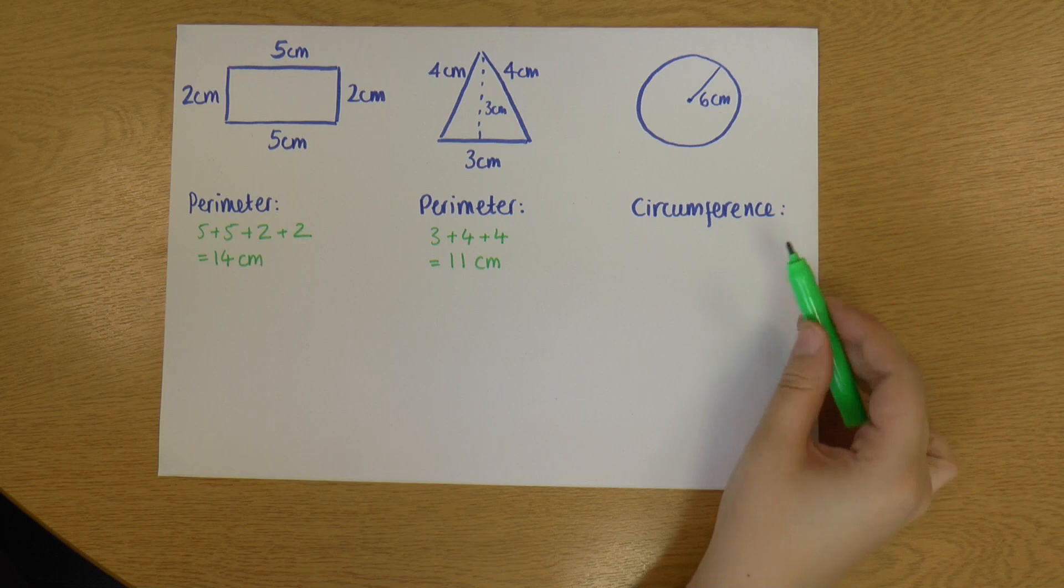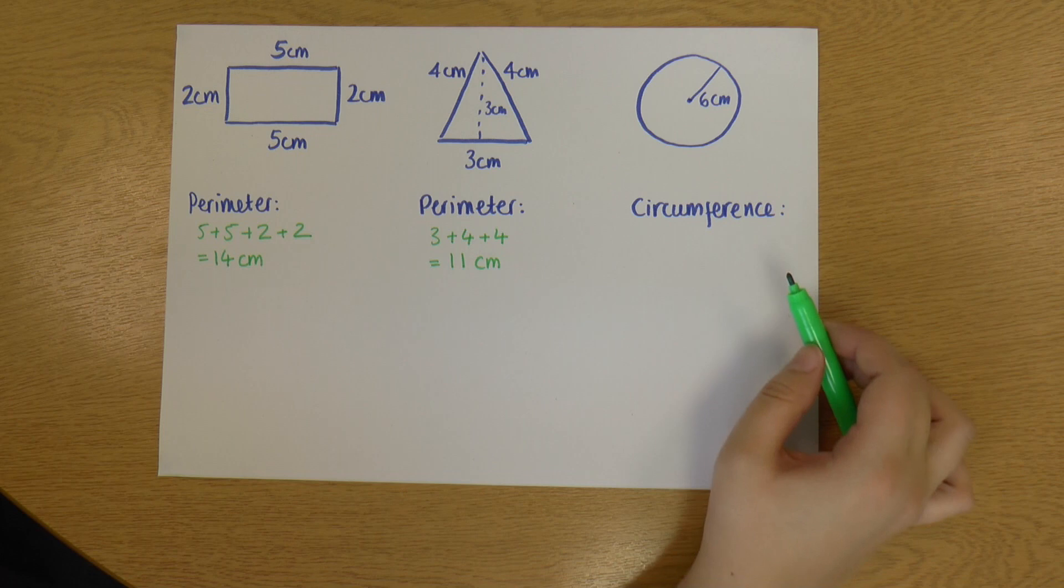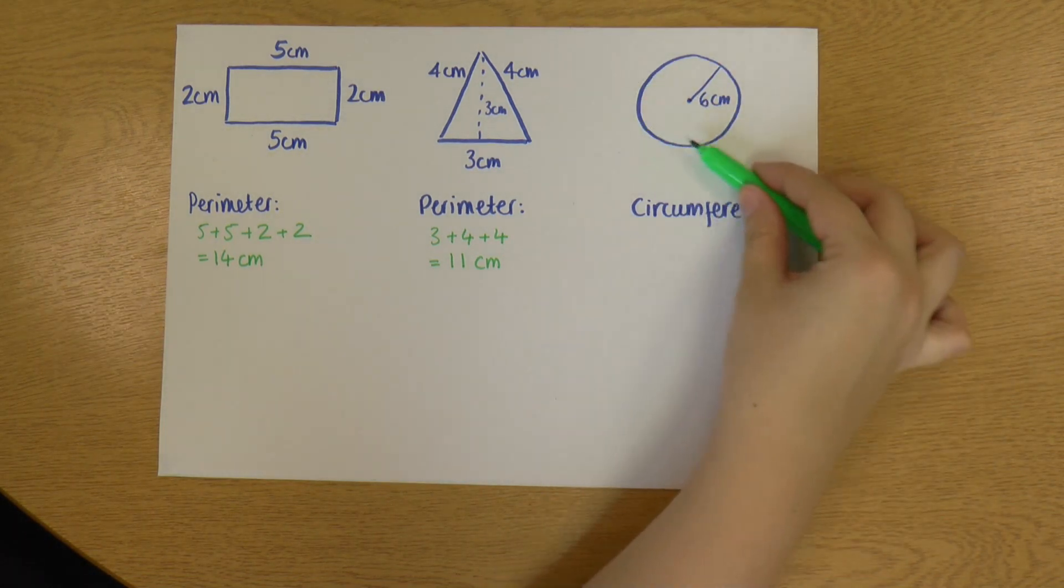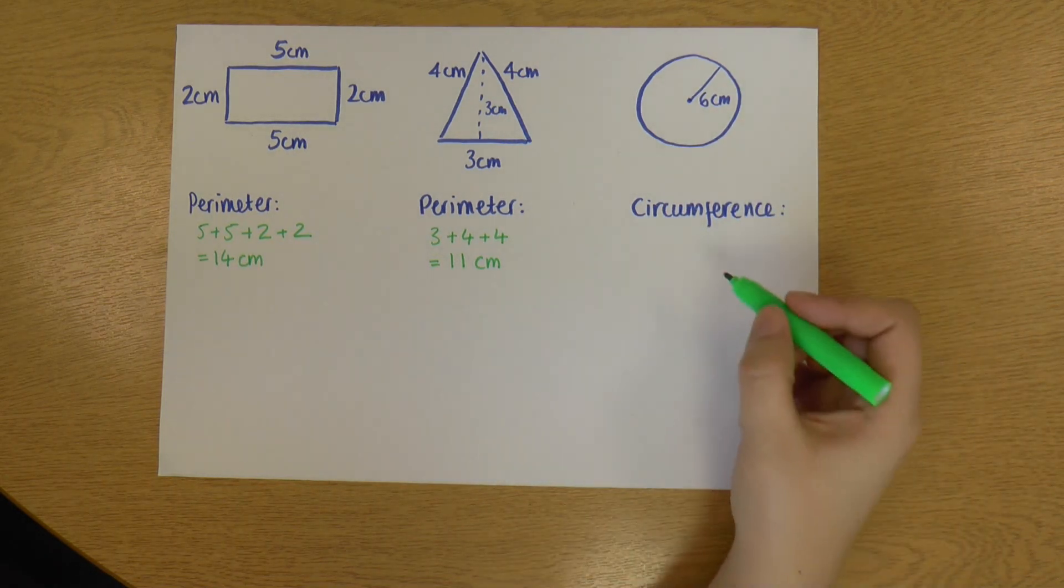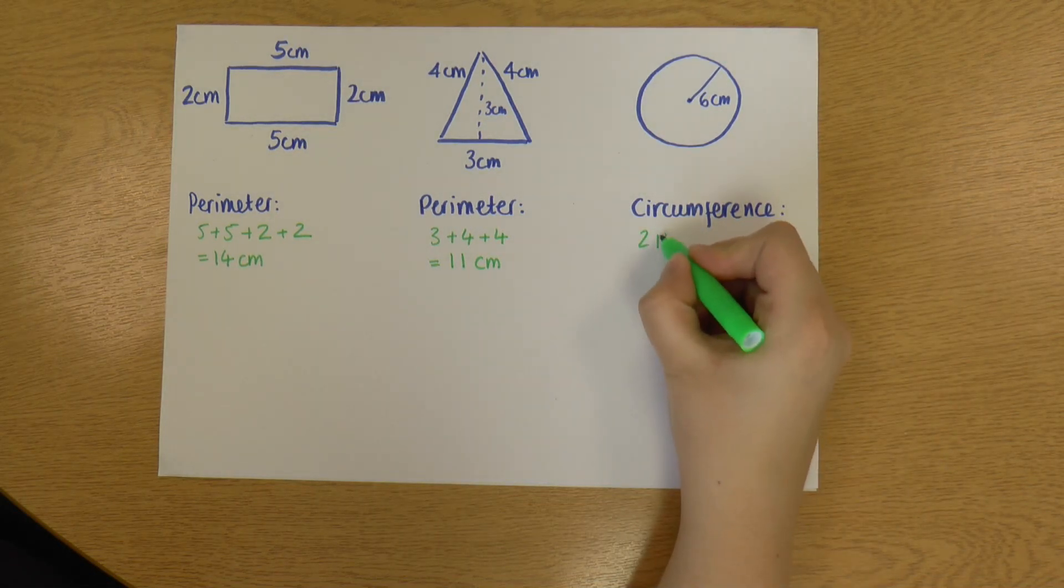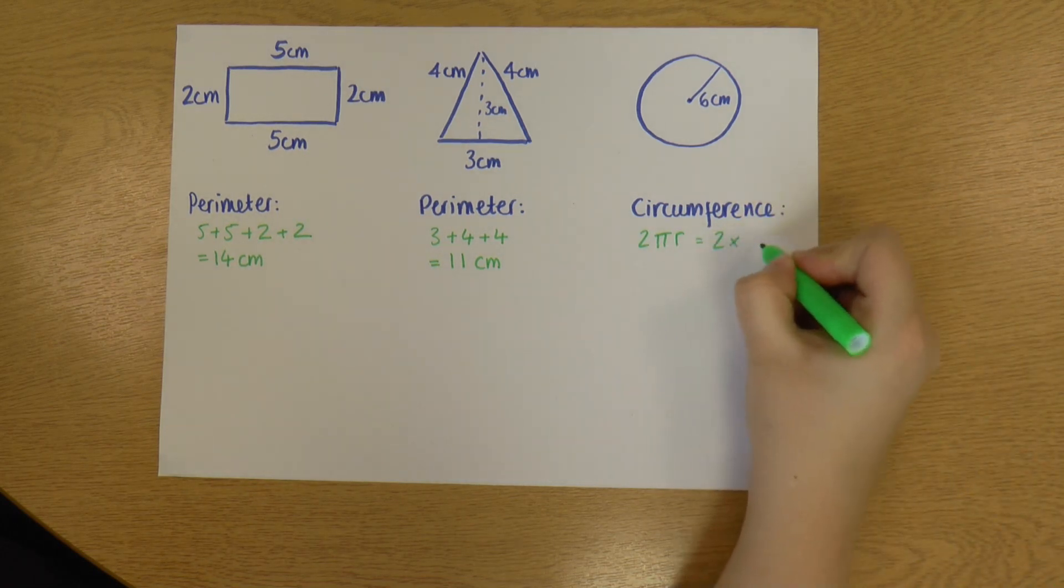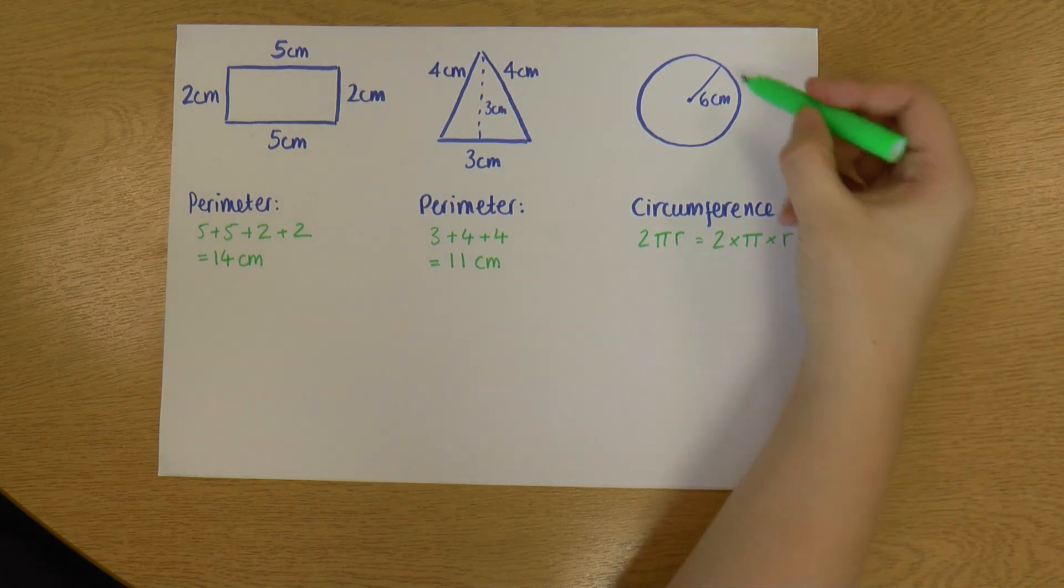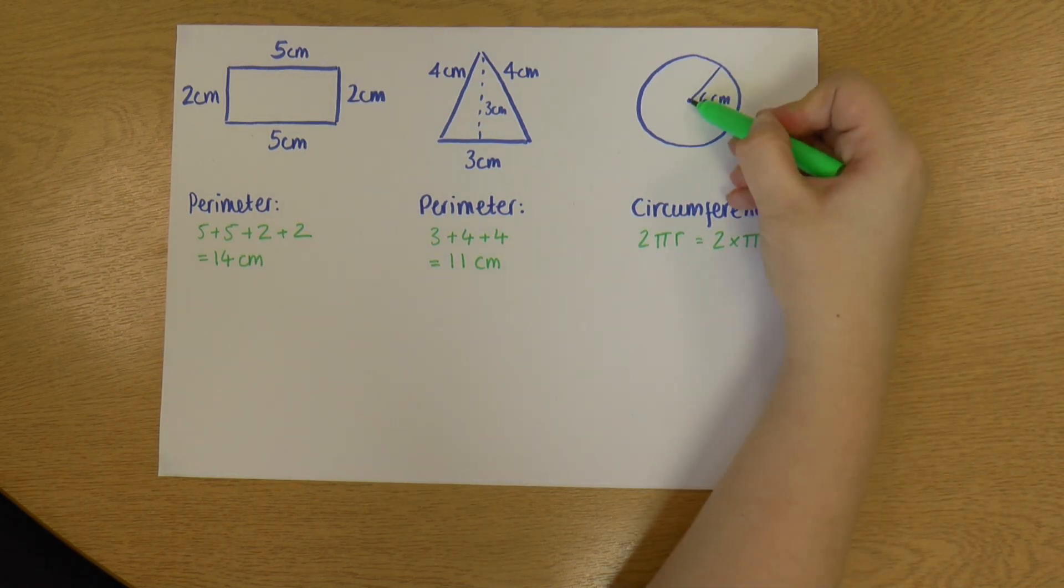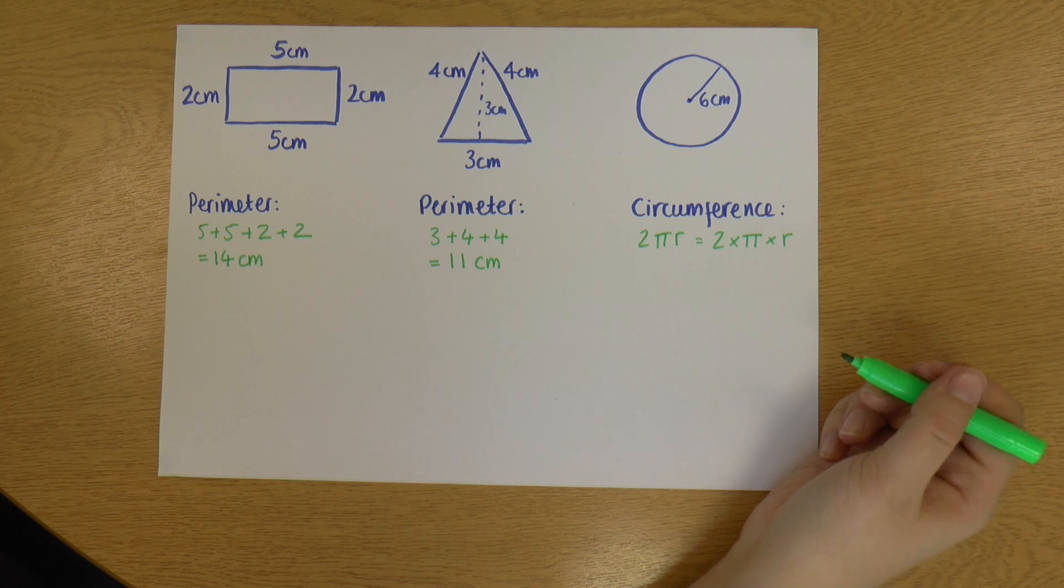And let's look at the circle. So remember, this is our circumference. Circles have a special formula that we use to calculate the circumference, since obviously we can't add length to the sides because it doesn't have any. So the circumference formula is 2πr. And what that means is 2 times π times r, where r is the radius, which is the distance from the center of the circle to the outside. So here I've got a radius of six. And π is just a number.